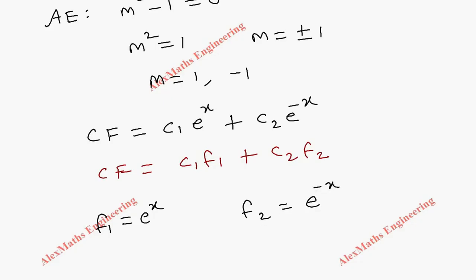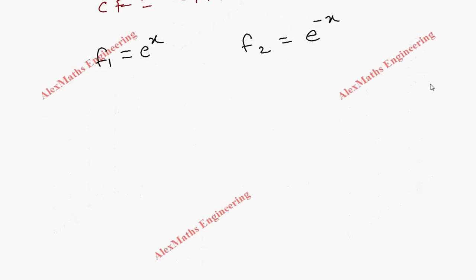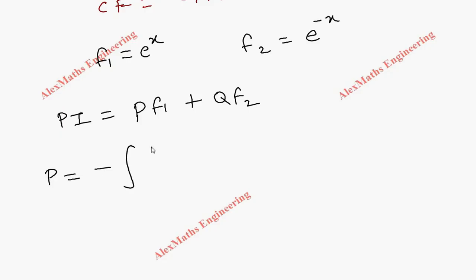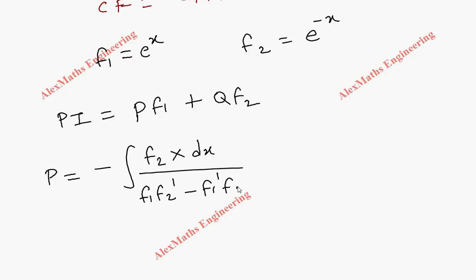The particular integral formula is p·f1 + q·f2. For finding p, we use: p = -∫[f2·X / (f1·f2' - f1'·f2)] dx. For finding q, we use: q = ∫[f1·X / (f1·f2' - f1'·f2)] dx.